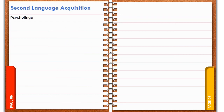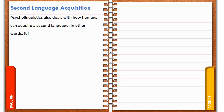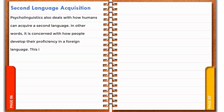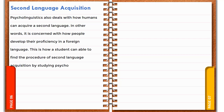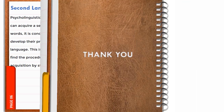Second language acquisition: psycholinguistics also deals with how humans can acquire a second language. In other words, it is concerned with how people develop their proficiency in a foreign language. This is how a student is able to understand the process of second language acquisition by studying psycholinguistics.